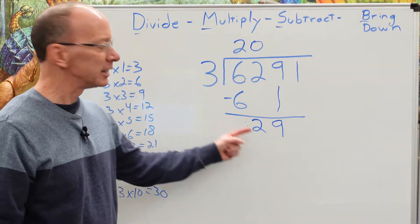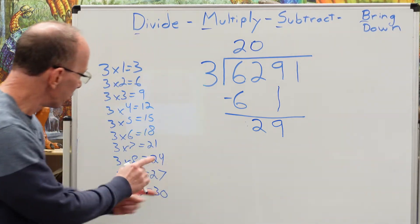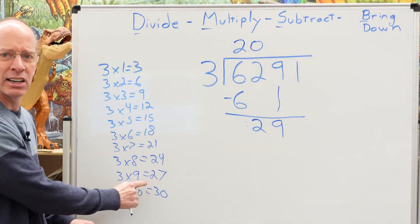How many times can I put three into 29? Let's move it over here. What number comes close to 29 but does not go over?